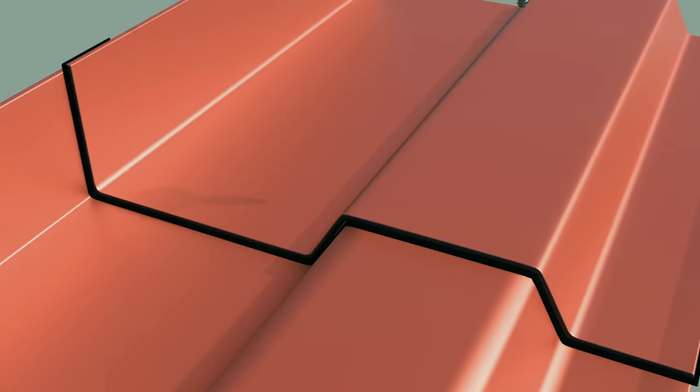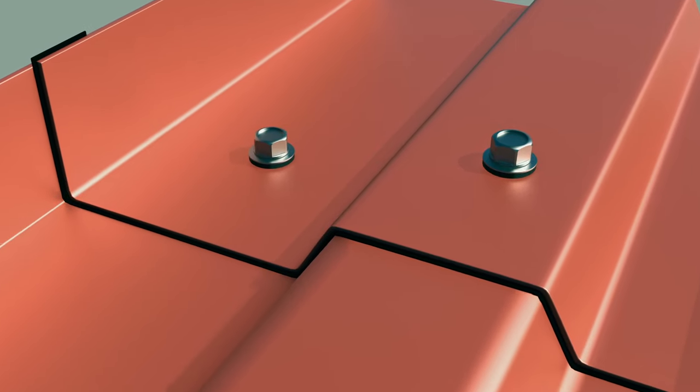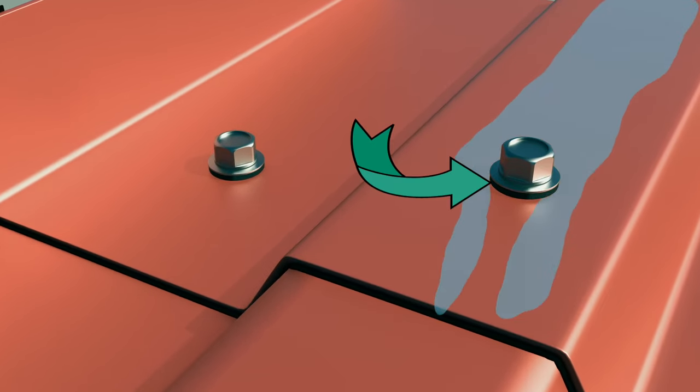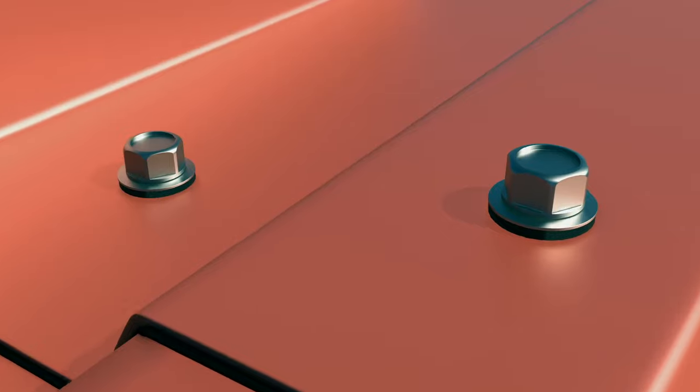These gaskets are then fastened with hexagon screws that have a neoprene washer. Over time, this neoprene washer will corrode or deteriorate, and when it rains, water will start leaking in at that fastener.